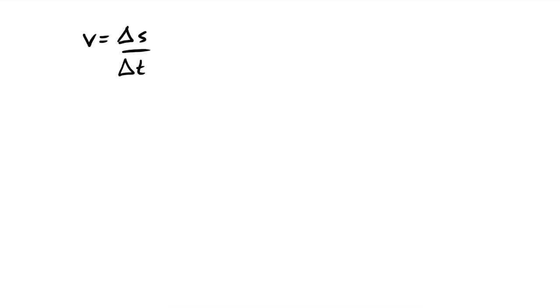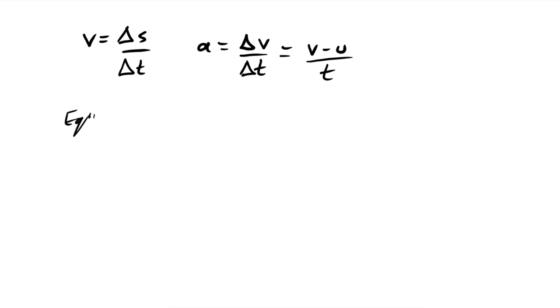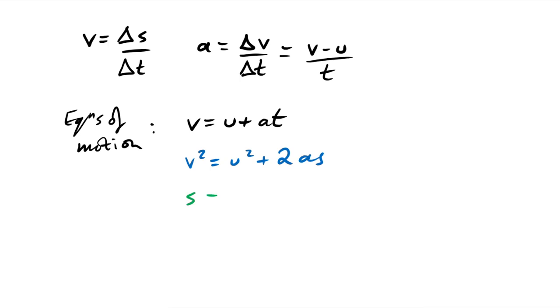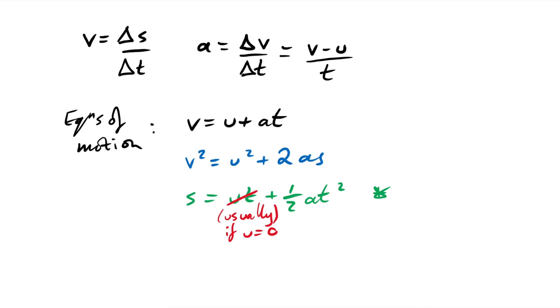Velocity equals displacement over time, and acceleration equals rate of change of velocity: a = Δv/Δt = (v − u)/t. This leads us into the equations of motion: v = u + at; v² = u² + 2as; s = ut + ½at²; and s = ((u + v)/2) × t. These equations are only used when there is acceleration — if there's no acceleration, just use speed = distance/time. In projectile motion, use them for the vertical component only.